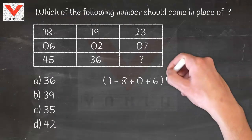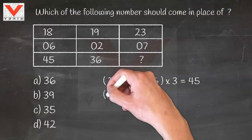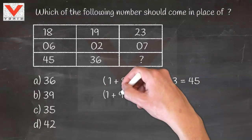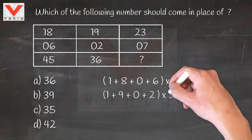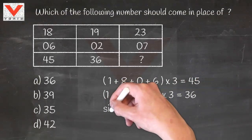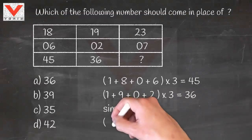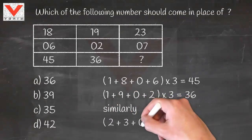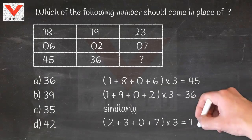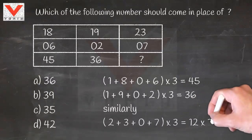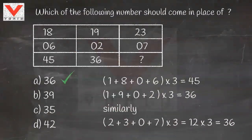Solution: Sum of 1806 multiplied by 3 gives 45. Sum of 1902 multiplied by 3 gives 36. Similarly, in the last column, sum of 2307 multiplied by 3 gives 36. So the answer is option A, that is 36.